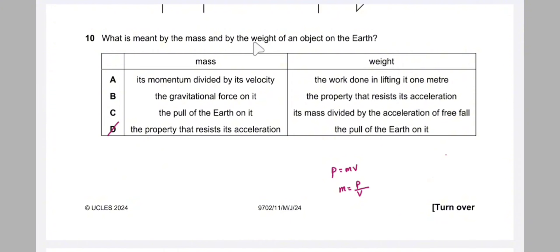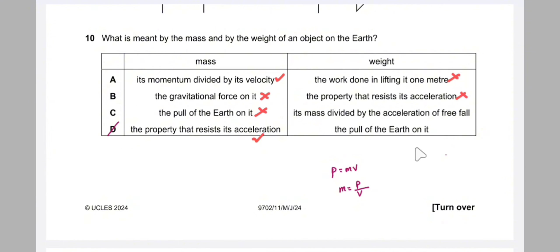Question 10: mass and weight of an object. Mass: momentum divided by velocity is correct (p = mv, so m = p/v); also, mass is the property of a body that resists its acceleration. For weight: weight equals mass times gravitational acceleration, so 'mass divided by g' is wrong (it's multiplied). 'The pull of the earth on it' is correct for weight. The correct statement is D.